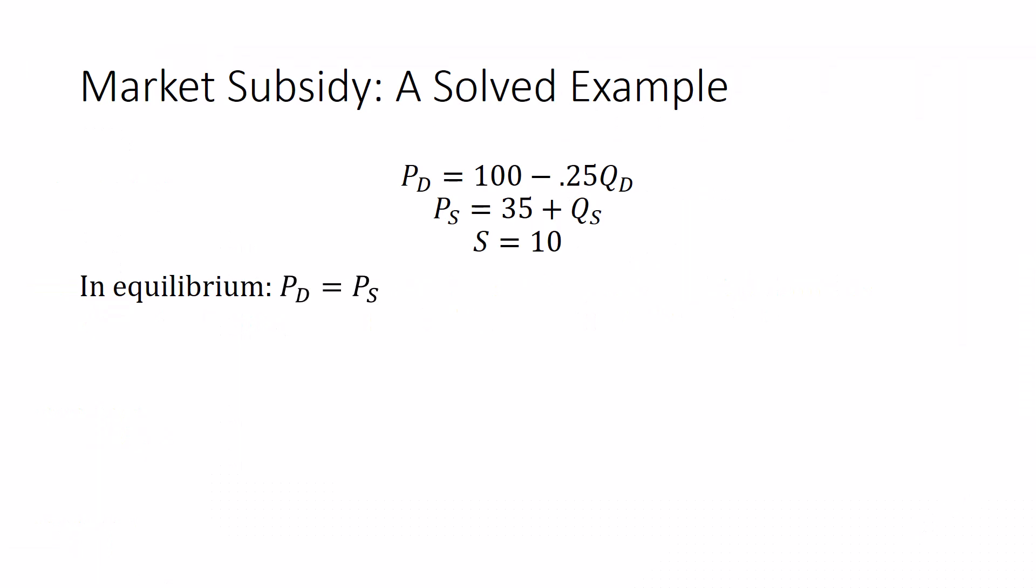So remember in equilibrium, we set the prices equal to each other, and then we would solve for a Q. We'd get a Q of 52 and a price of 87. If you don't know how to do that, you shouldn't be in this video, you should go back to my equilibrium stuff. So let's go forward now.